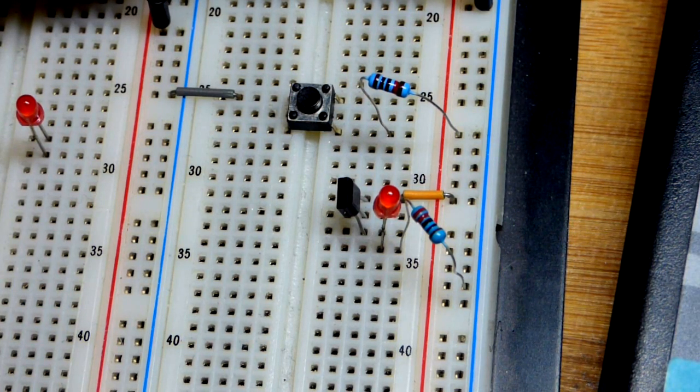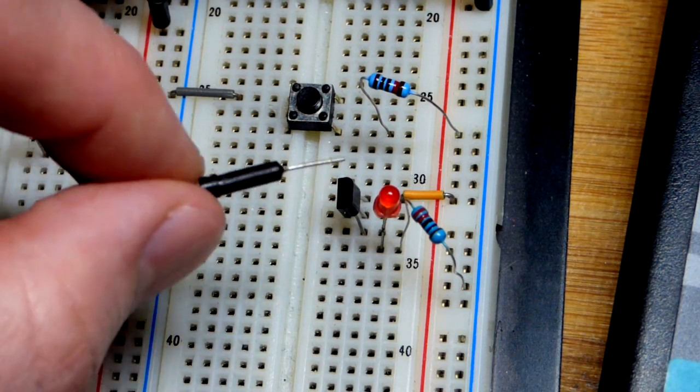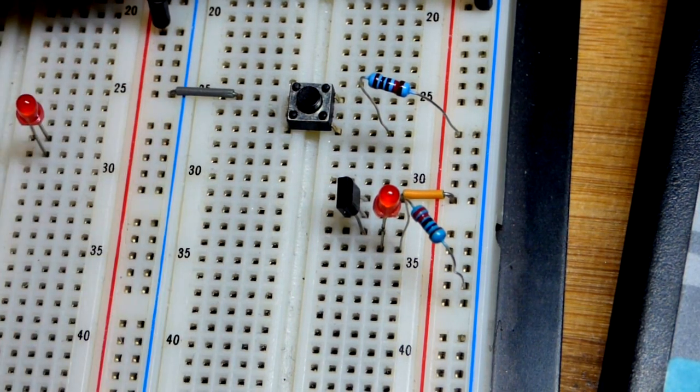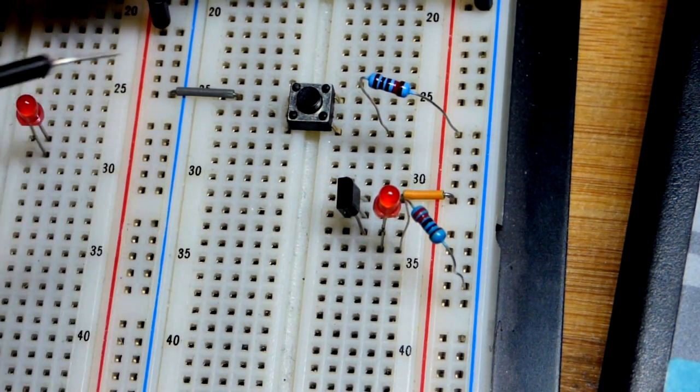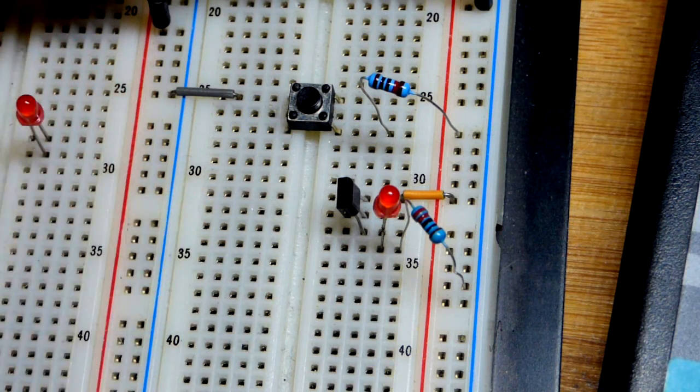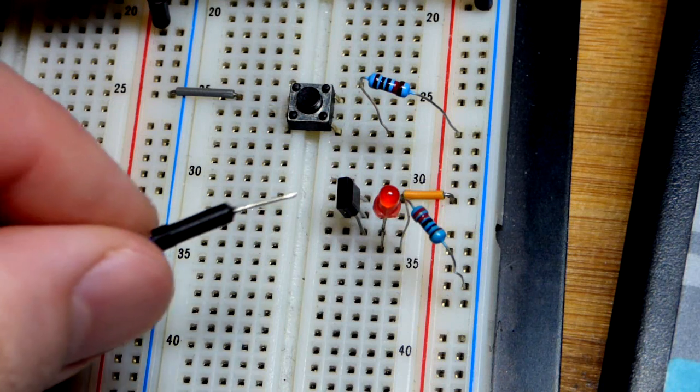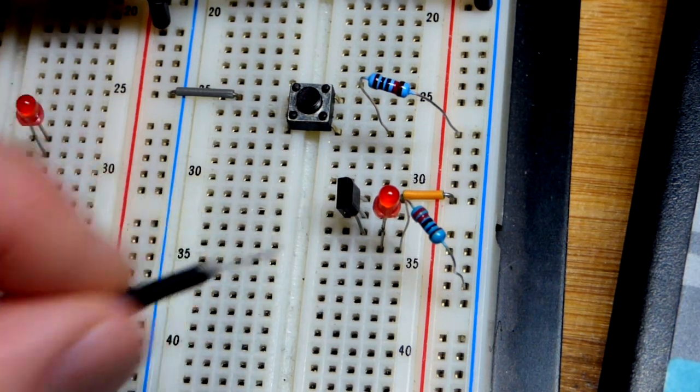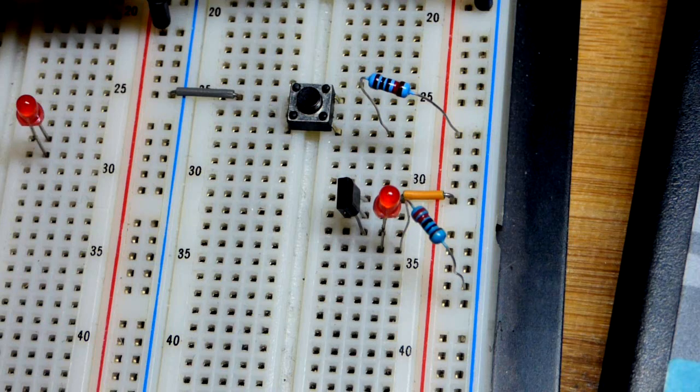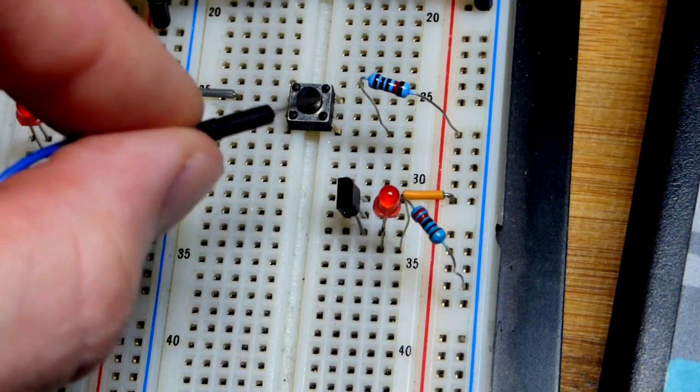This is all just like the N-channel enhancement mode MOSFET that we looked at in the last video, but it's a different packaging. There are also the TO-92 packaging, but when I ordered this I didn't pay attention to the packaging. On Digi-Key all there is is the e-line packaging.